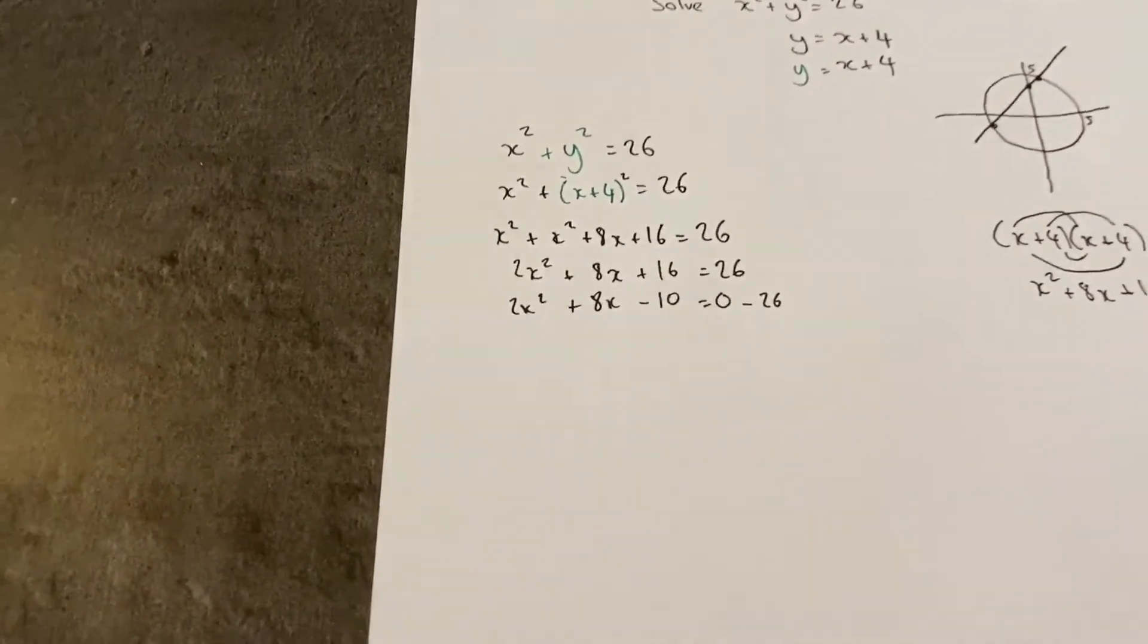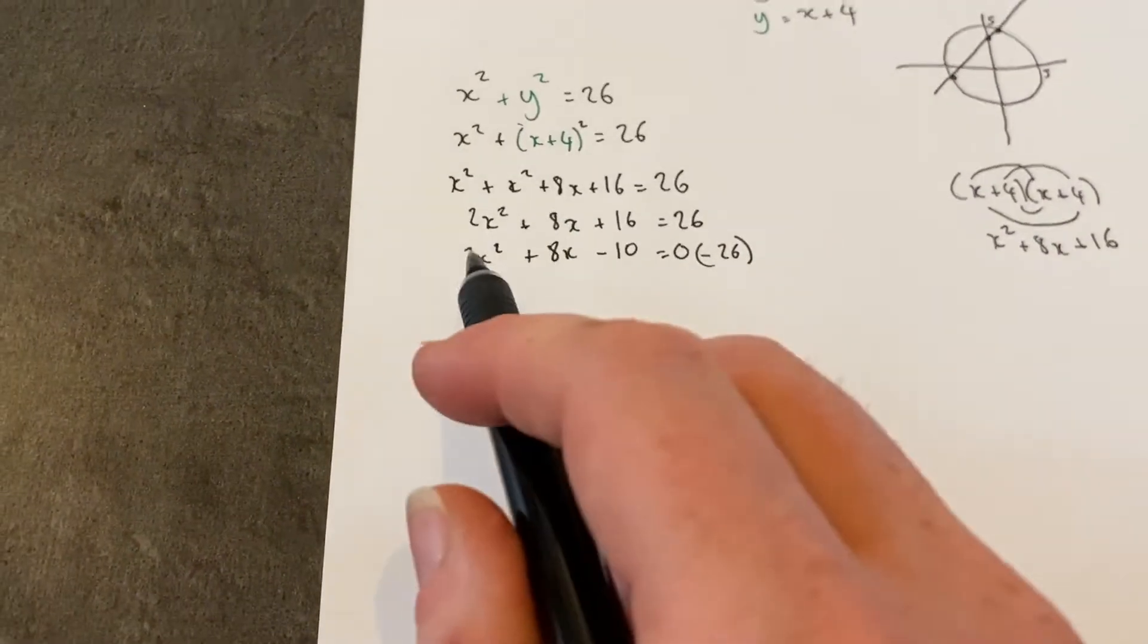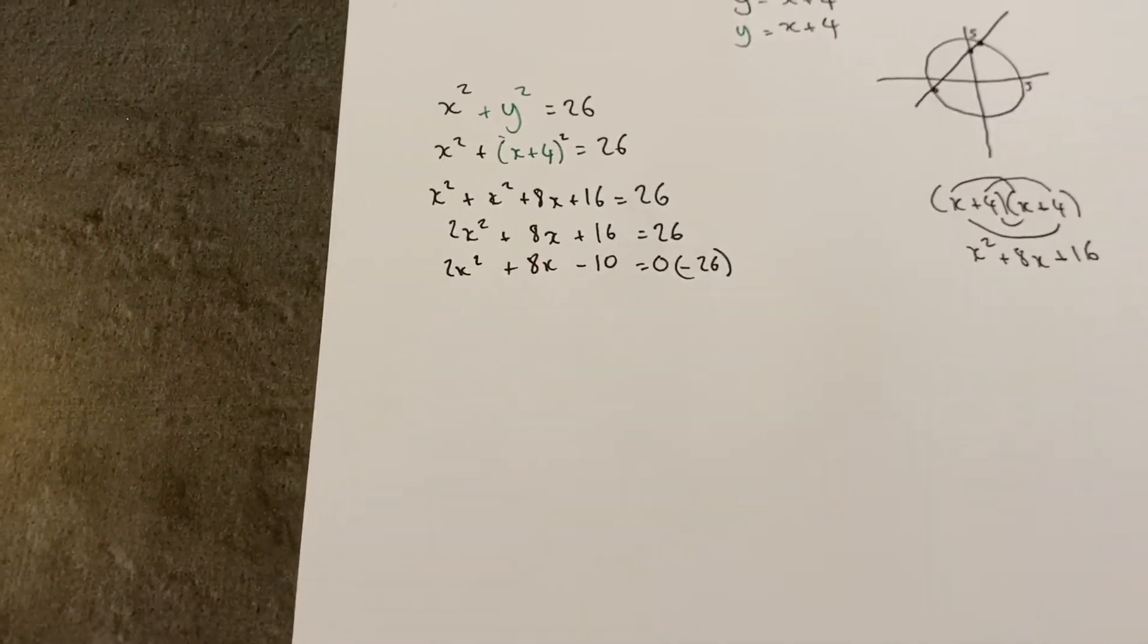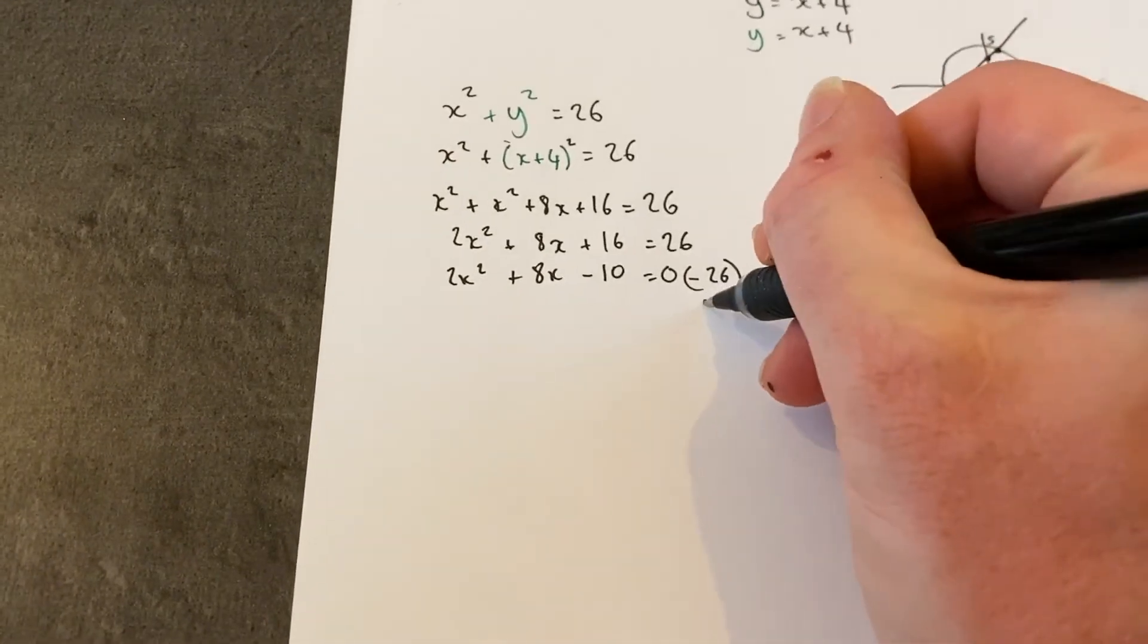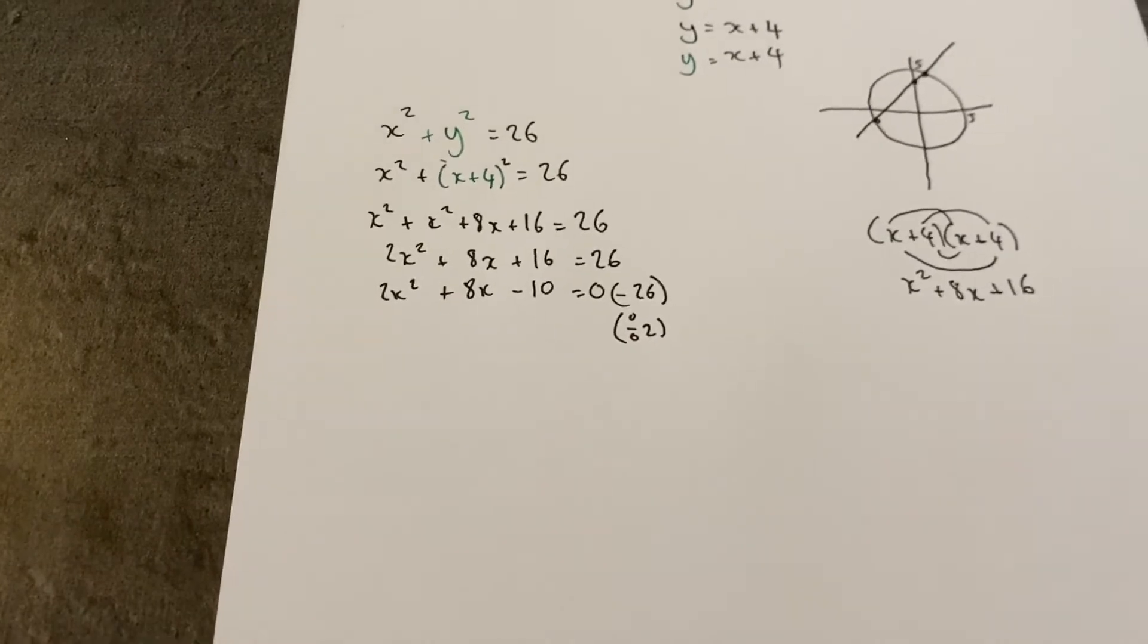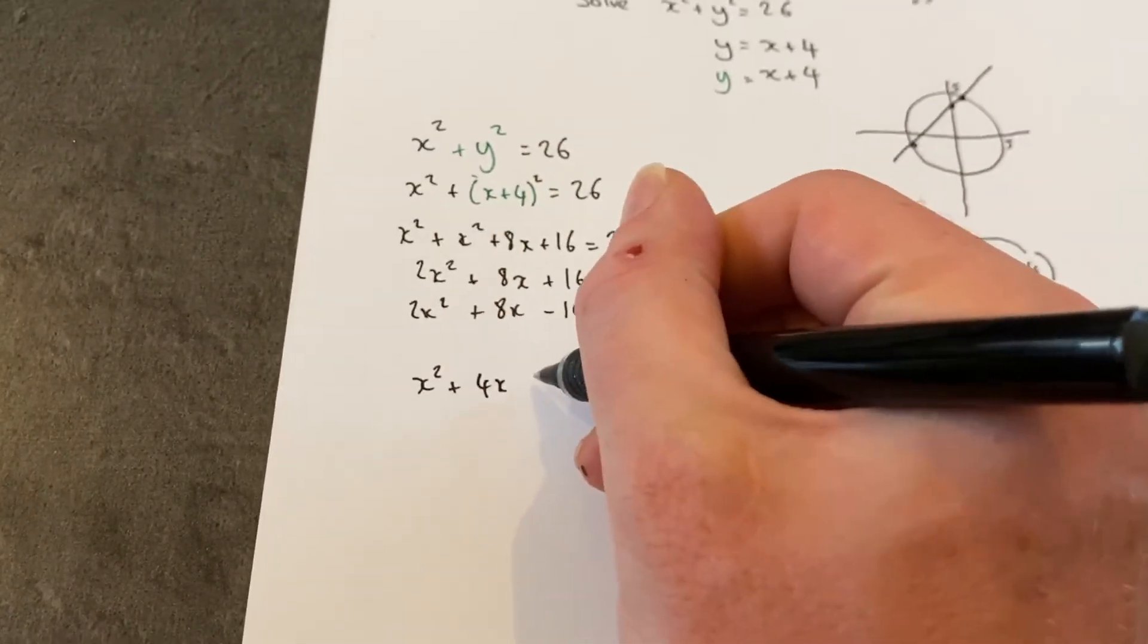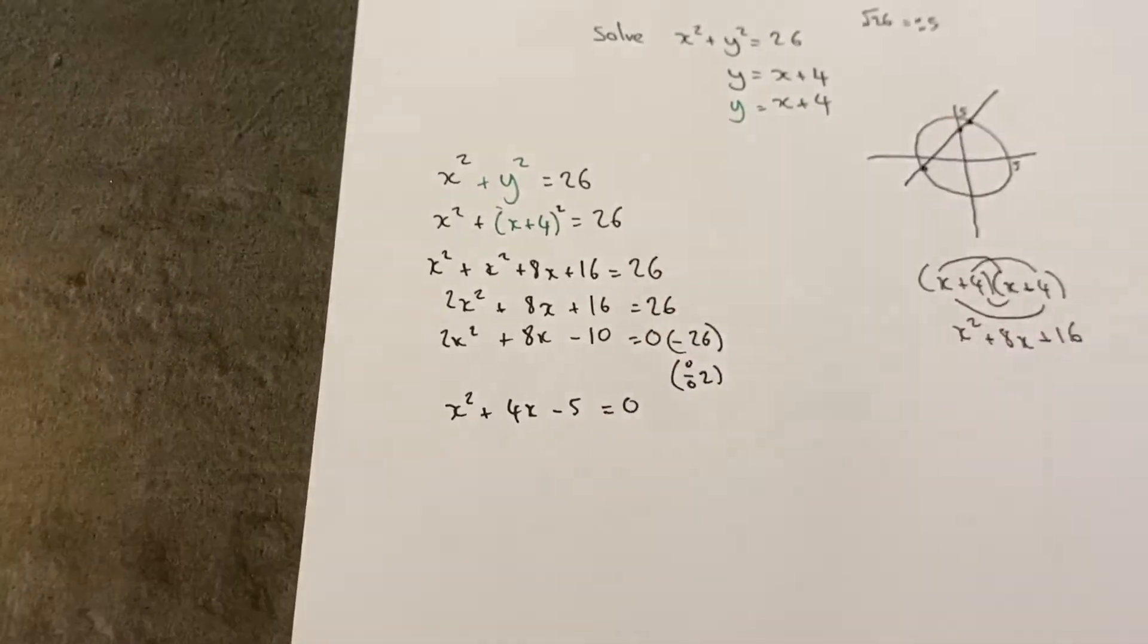Before we solve this, it's worth observing that all these numbers are even numbers—they've all got a factor of 2. I can divide this equation by 2 to make it simpler, and this becomes x squared plus 4x minus 5 equals 0.